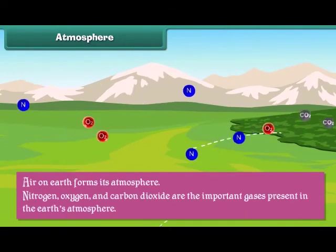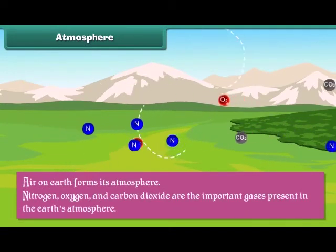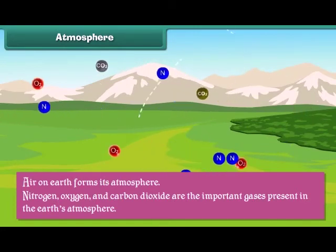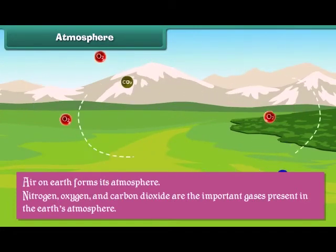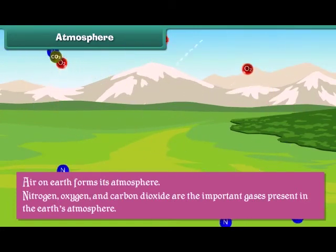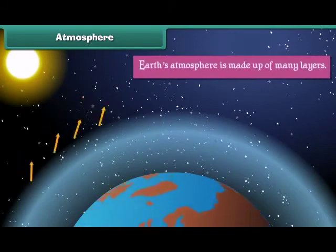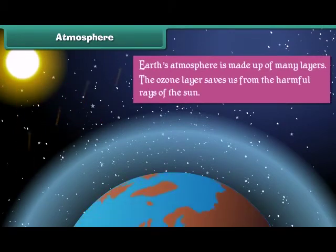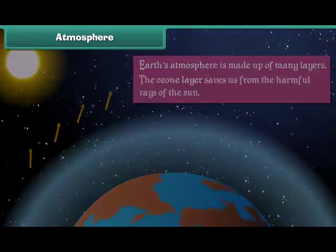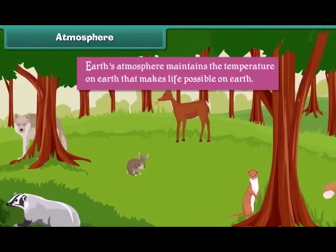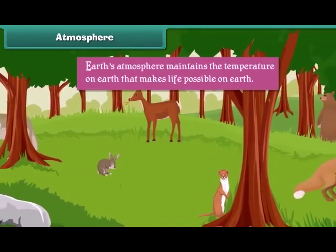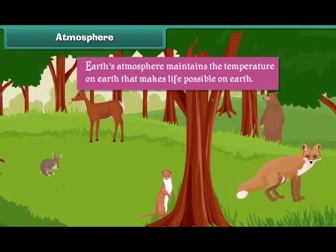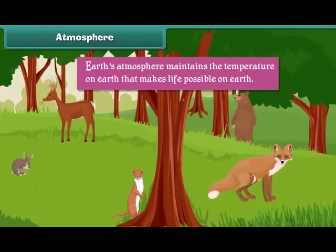Air on Earth forms its atmosphere. Nitrogen, oxygen and carbon dioxide are the important gases present in Earth's atmosphere. Earth's atmosphere is made up of many layers. The ozone layer saves us from the harmful rays of the Sun. Earth's atmosphere maintains the temperature on Earth that makes life possible.